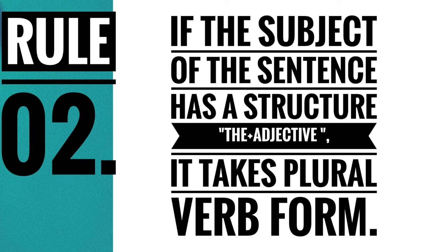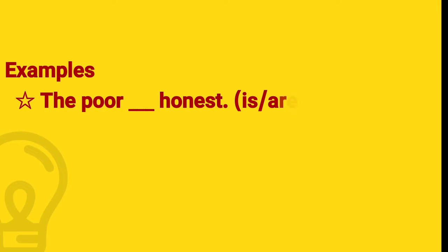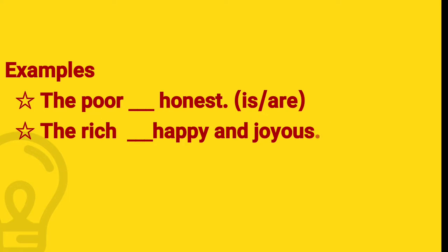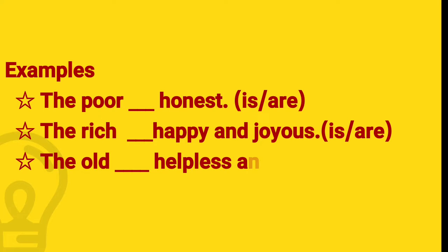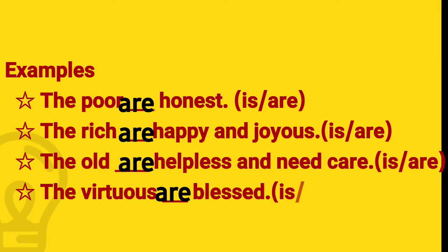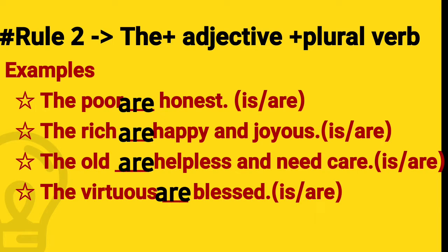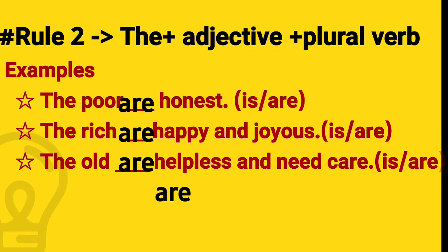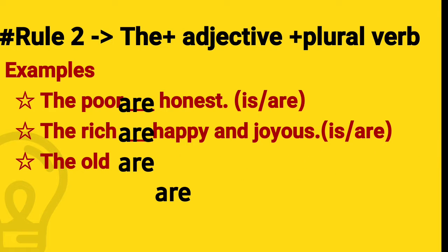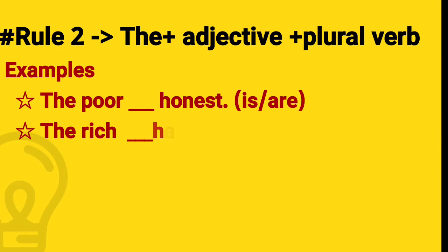For example: 'the poor,' 'the rich,' 'the old,' 'the virtuous.' In these sentences, poor, rich, old, and virtuous are the adjectives. All these examples share the same structure: 'the + adjective' as the subject. So we should always use plural verb form for such structures.